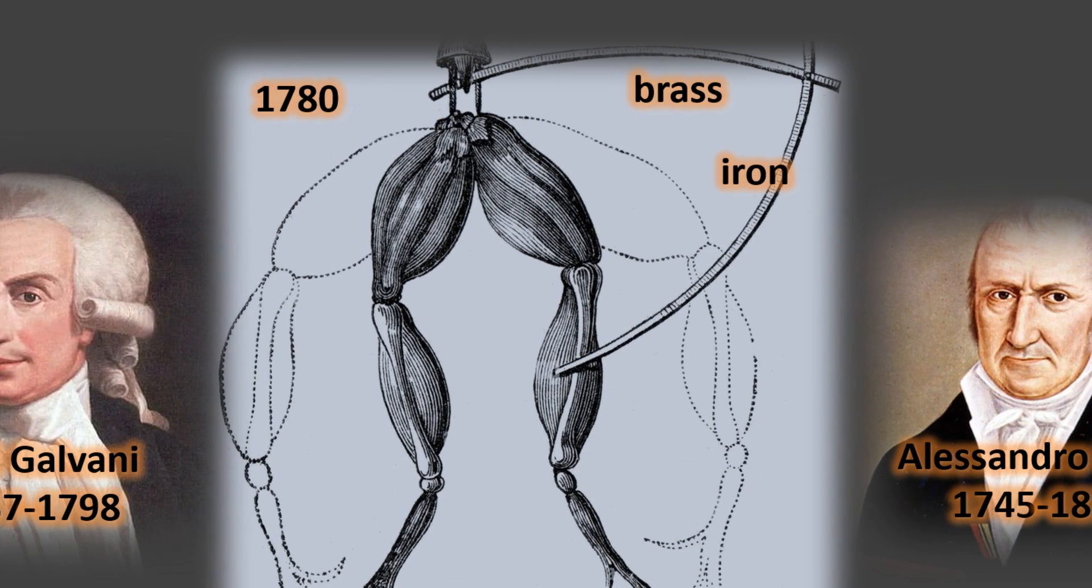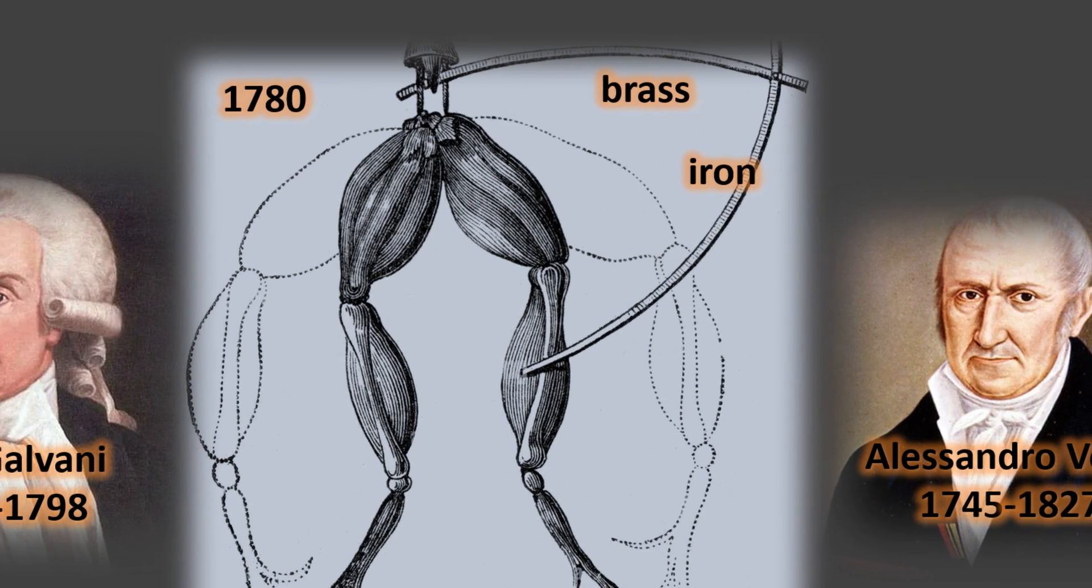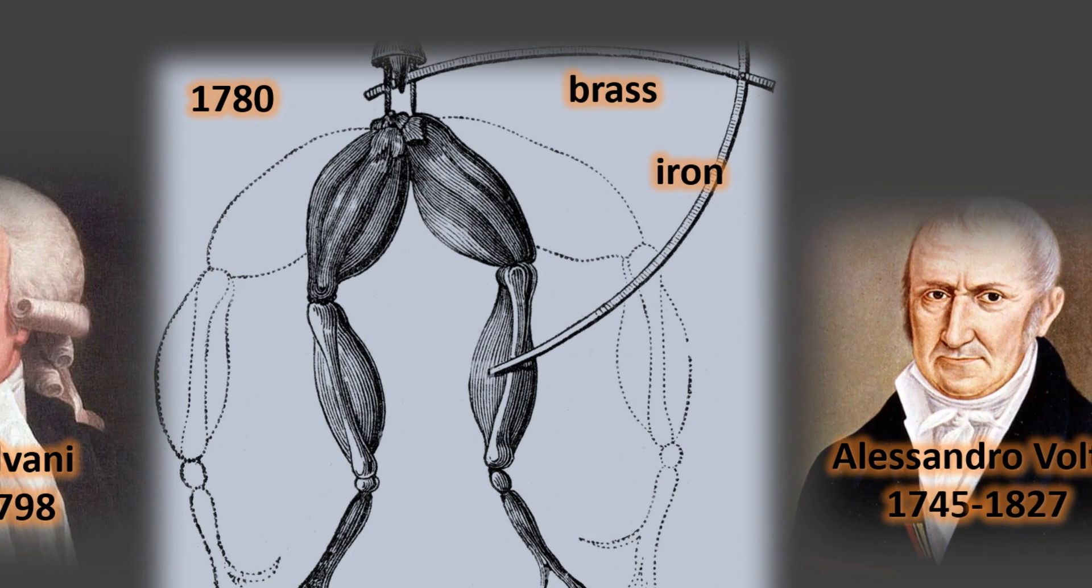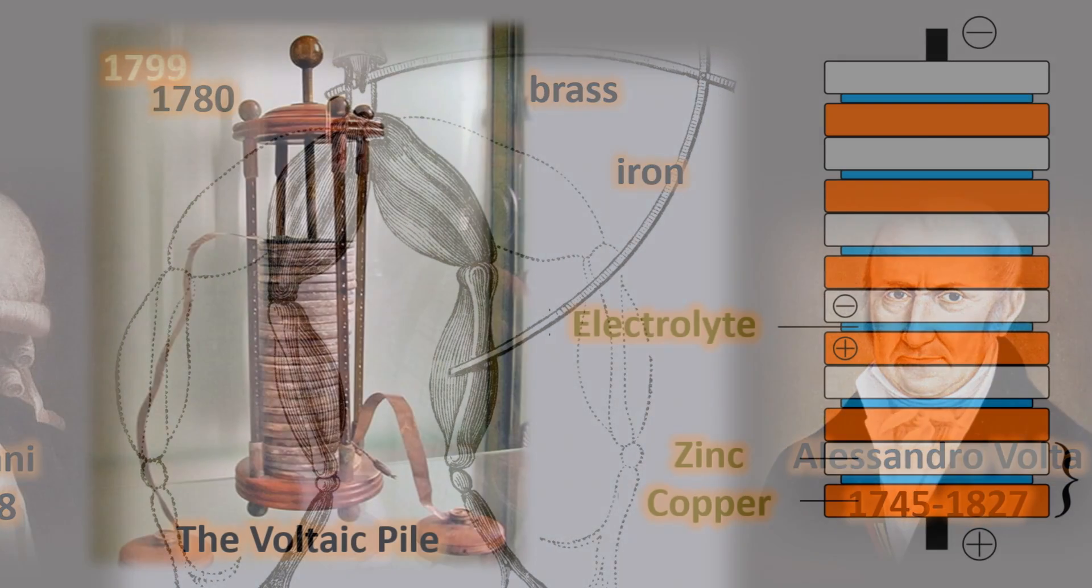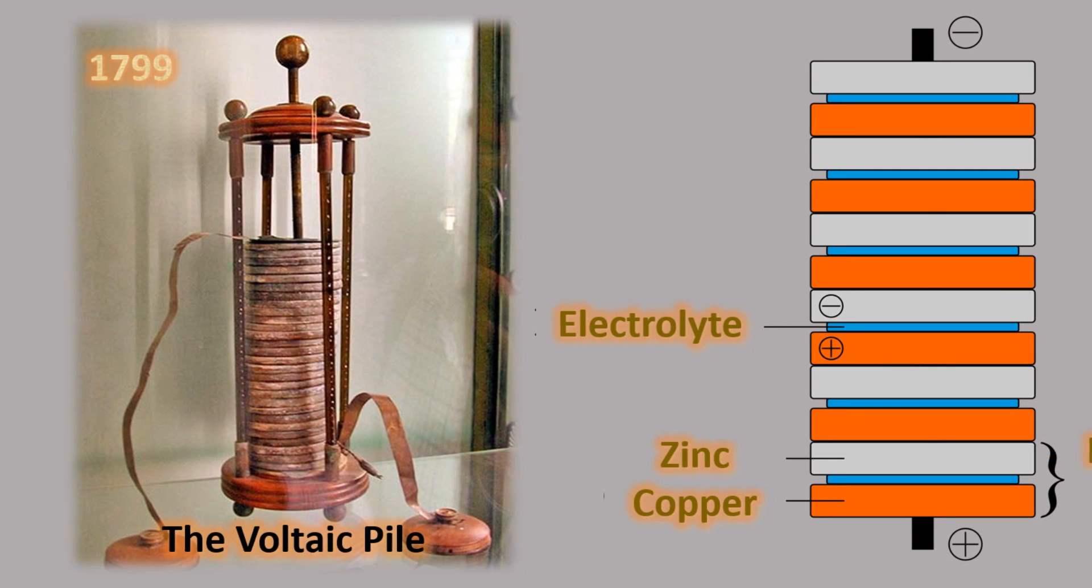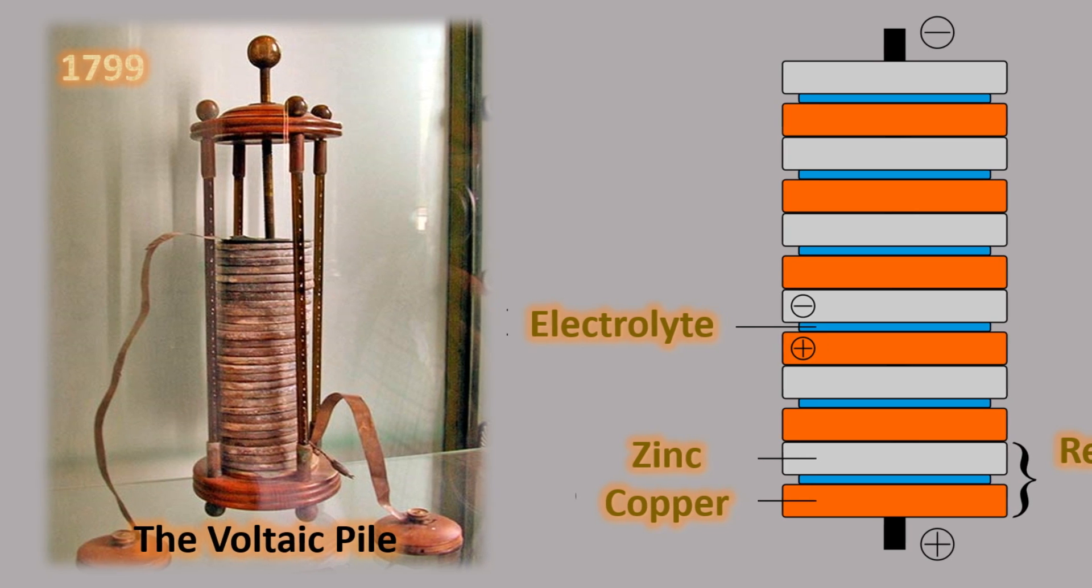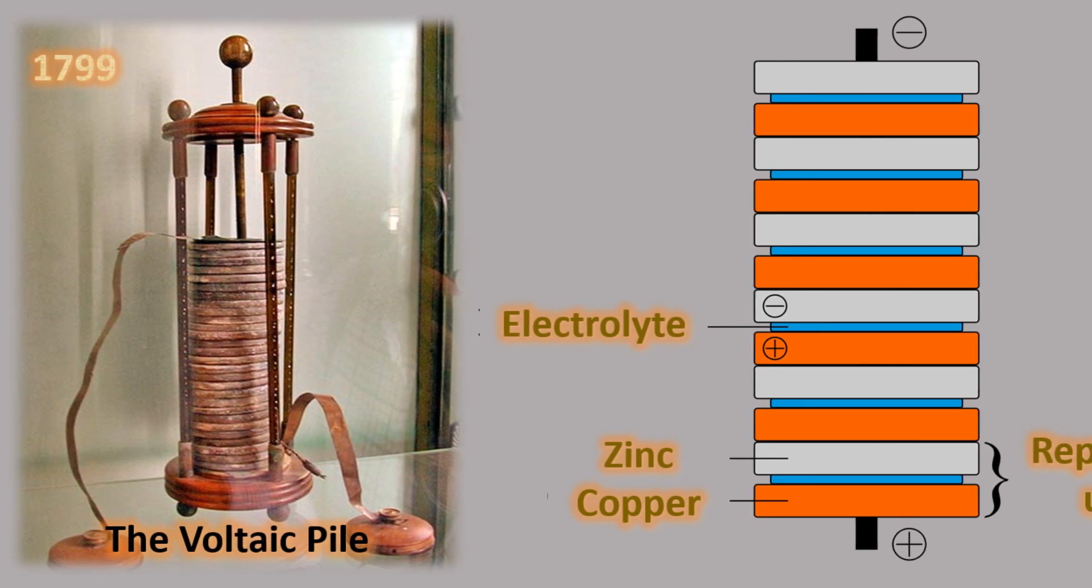His friend Alessandro Volta, a physicist and chemist, believed the electricity that stimulated the frog's leg was generated from the chemical reaction between the two metals in contact. This new understanding inspired Volta to build the first battery, known as the voltaic pile, about a decade later in 1799.